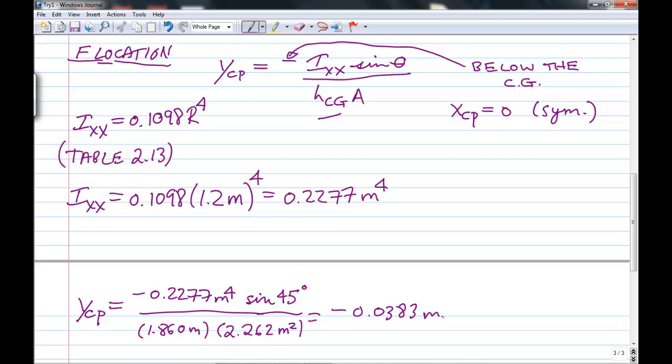So we know that it acts about 3.8 centimeters below the center of gravity. So now we can do the last part. We'll just draw a free body diagram of the gate. And we'll do the sum of the moments to get that force.